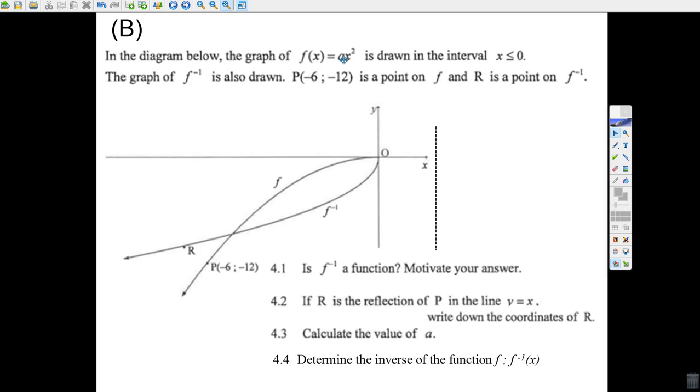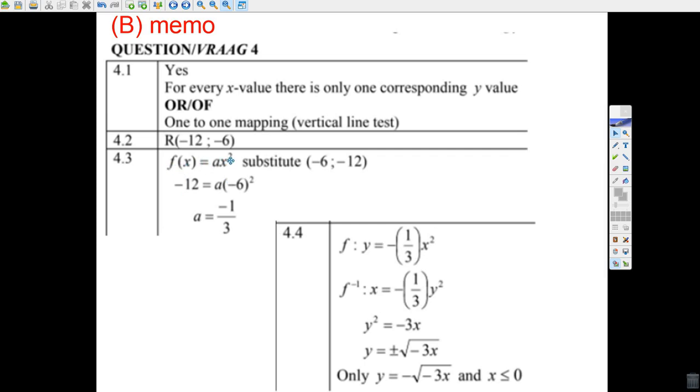Calculate the value of a. We don't know what a is, but we know we've got a point on f. We know that x is minus 6. If we go minus 6 squared, we know that the y value, which is f(x), if I put in minus 6 for x, I get minus 12 out for y. f(x) equals ax squared. Instead of x, you put in minus 6. Instead of f(x), you put in minus 12. That's 36. Minus 12 divided by 36 is minus 1 over 3. So a is minus 1 over 3.